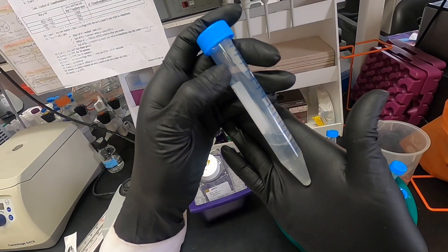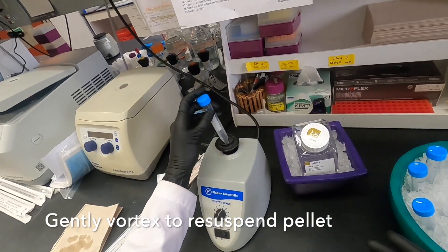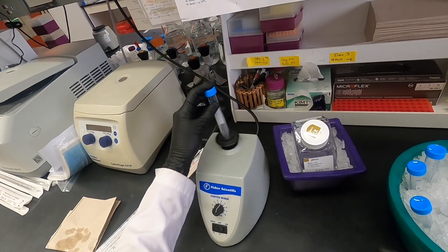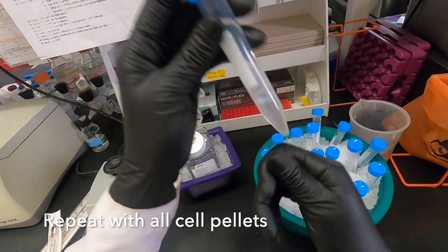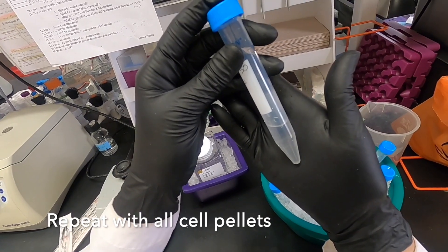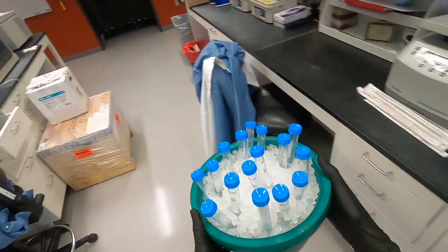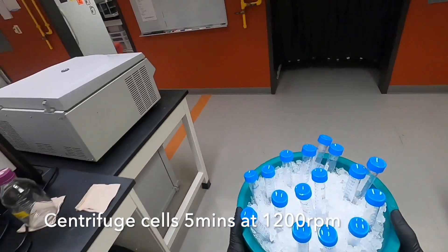As you can see from the bottom of the tube, we have not resuspended our pellet. We will now do so by gently vortexing the cells. We can also resuspend by pipetting up and down several times. This is followed by another centrifugation step.